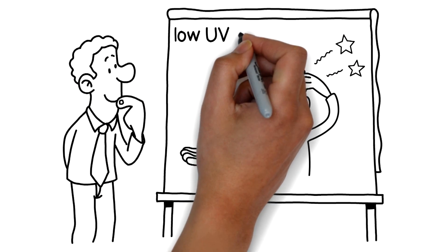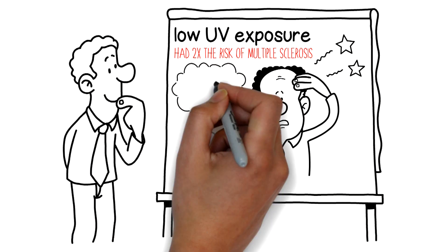Research studies have reported that people with low UV exposure had two times the risk of multiple sclerosis.